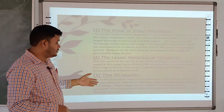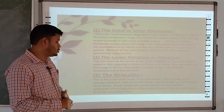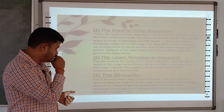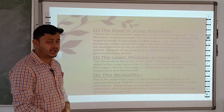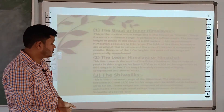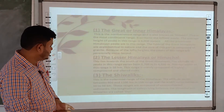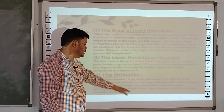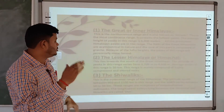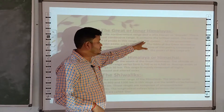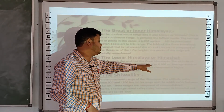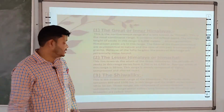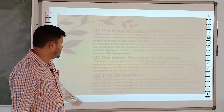Now, Siwalik is the outermost and lowest range. Its average height is 900 to 1,100 meters — note that this is meters, not kilometers. The width of this range is approximately 10 to 50 kilometers.